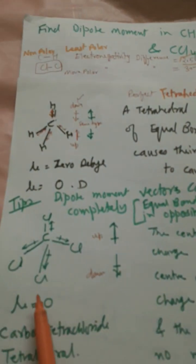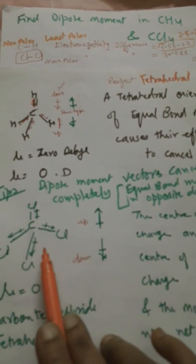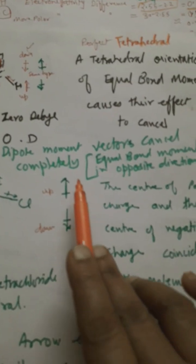They are directed opposite to each other - one up and three down - so the vector sum shows cancellation.